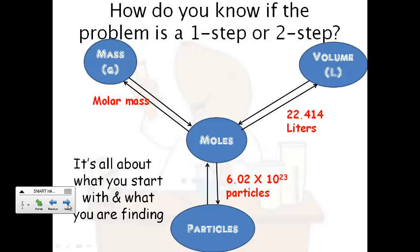Now, if you're not given moles to start with and you're not asked to find moles, it's going to have to be a two-step problem. So if you're given mass and asked for particles, you're going to be going from mass to moles to particles. So you'd use molar mass to get from mass to moles, and then from moles to particles you'd use the 6.02 times 10 to the 23rd. So if you start with moles or end with moles, it's a one-step. If you don't start or end with moles, it's going to have to be a two-step.